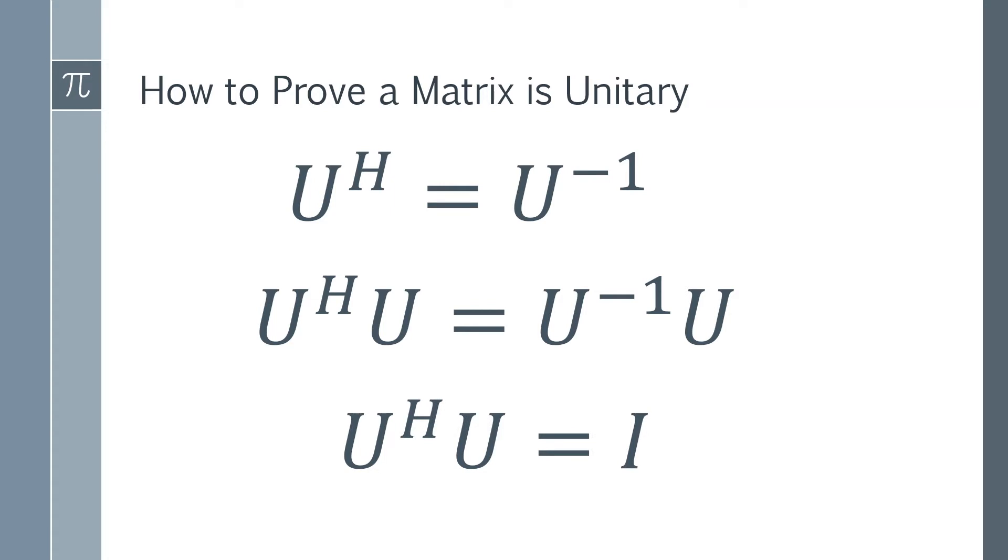So what you can say is that if you find the conjugate transpose of the matrix, multiply it by your original matrix, in this case matrix U that we're saying is unitary, and if you indeed have a unitary matrix, you can show that those two matrices multiplied together give the identity matrix. And that is how you prove that a matrix is unitary.